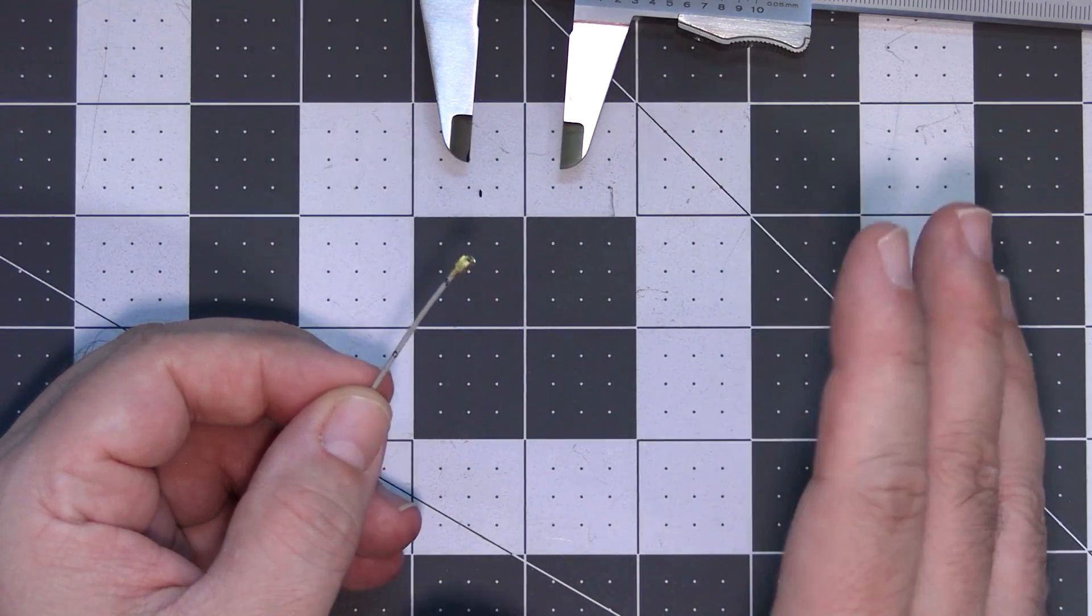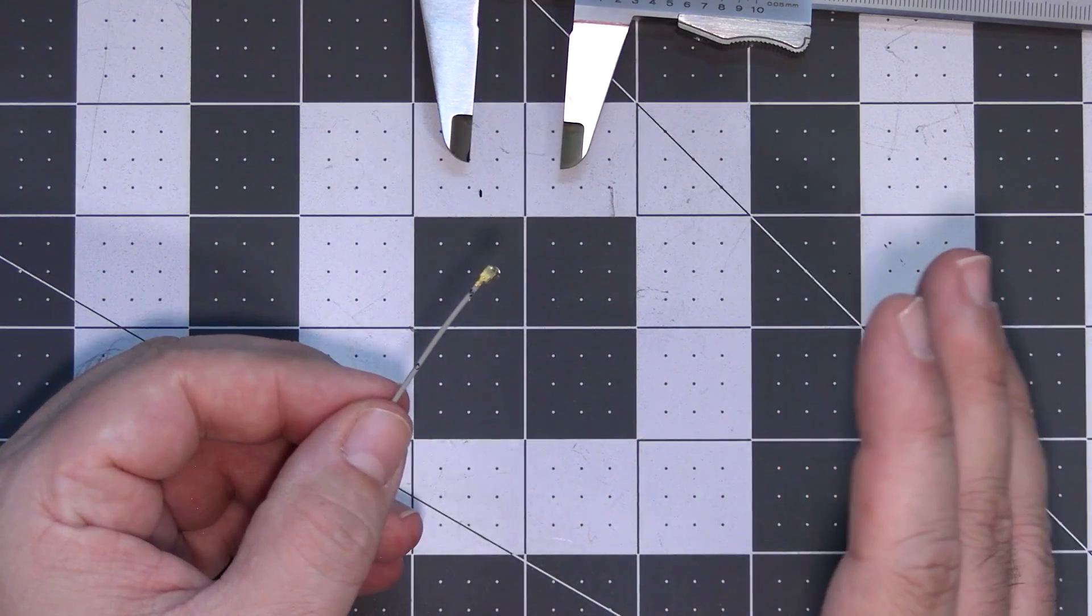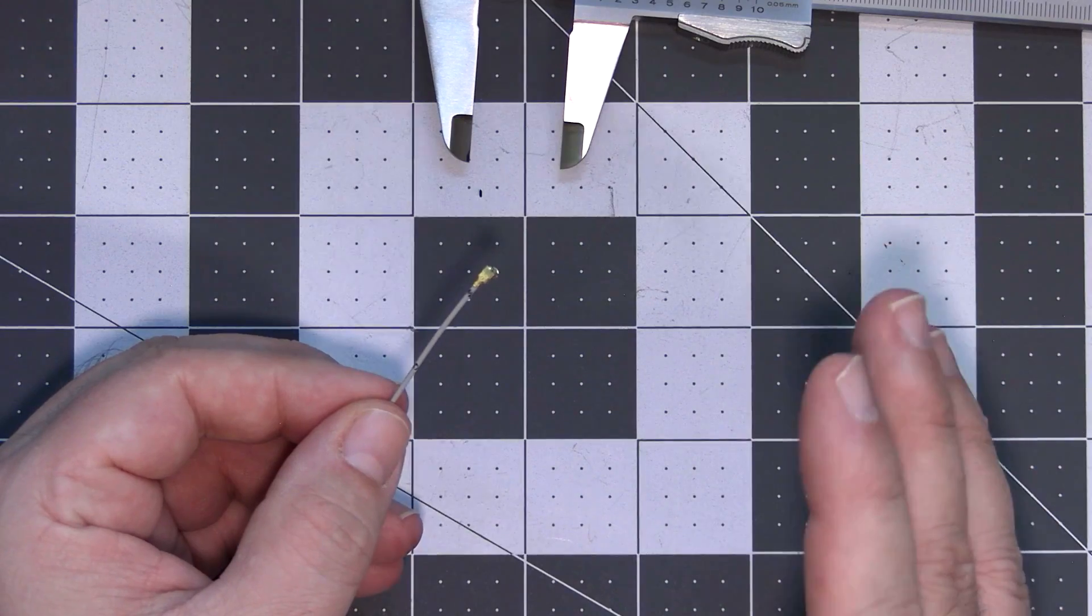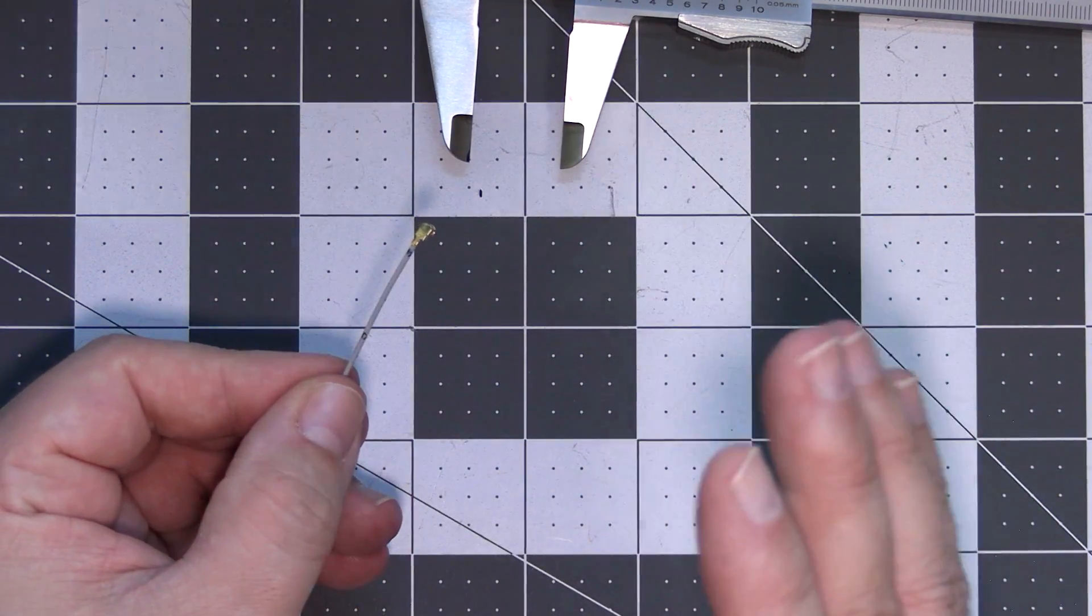However, because this is the LoRa modulation, this is extremely forgiving in terms of the length of the active element and most probably everything between 20 to 25 millimeters will be just fine.